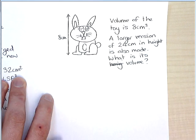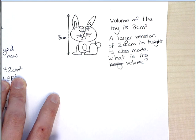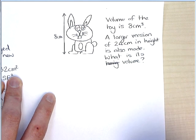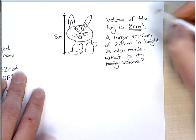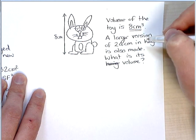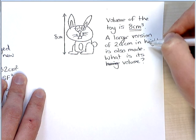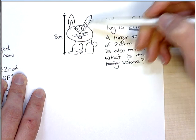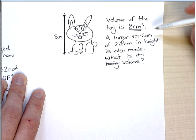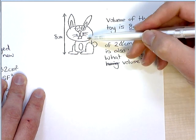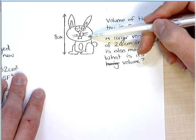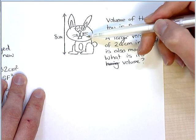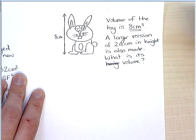Now, this one is slightly different, because my very badly drawn rabbit with no arms is a toy. And it has a volume of 8. Now, a larger version is made, which is 24 centimeters high. So we can see this one is 8. So it's actually going to be 3 times as big. Now, we don't have a formula for finding the volume of this. The only way we would do it is immersing it in water, I guess, and looking at displacement.